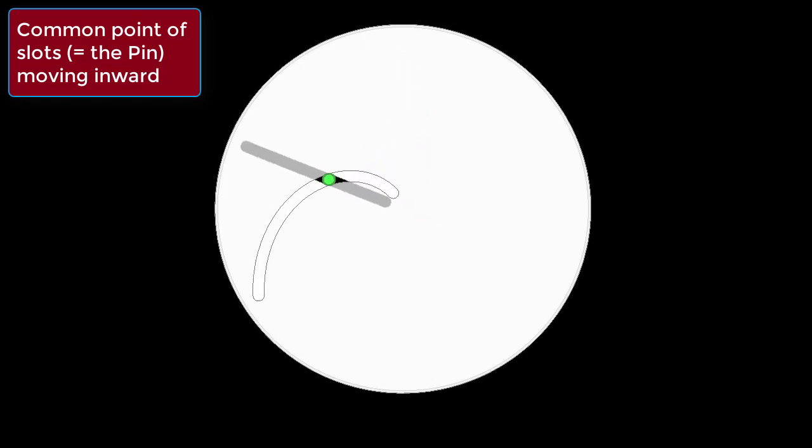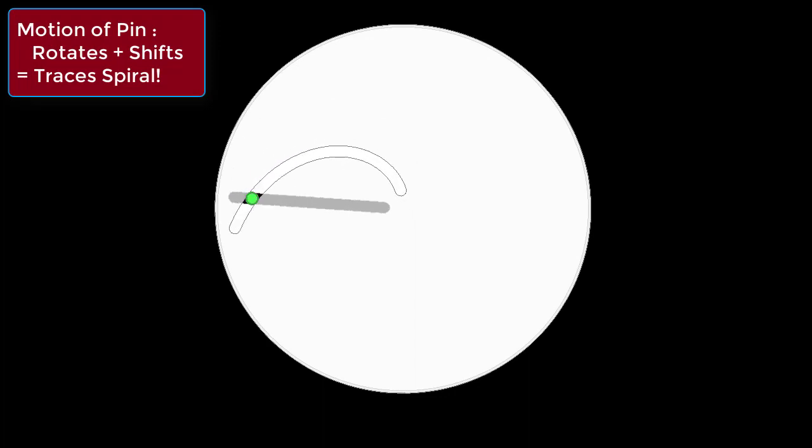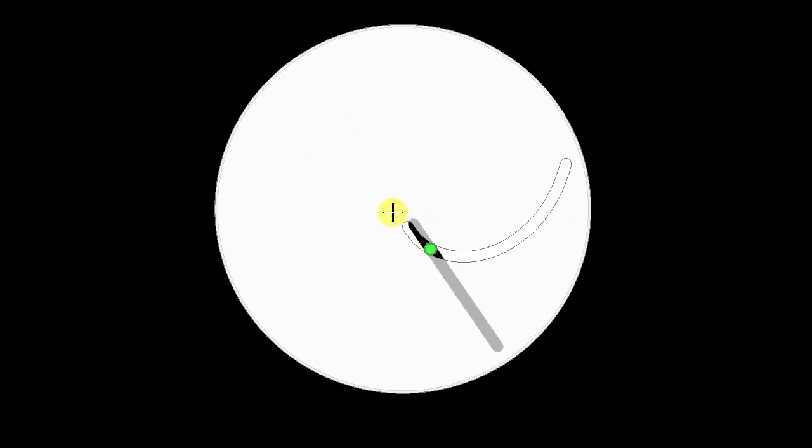So, this pin is coming radially inward, this green pin that we had put in, and if you are rotating at the same time coming towards the center what will happen? You will trace a kind of a spiral. You are spiraling towards the center and that is the crucial idea of plotting a damped center.